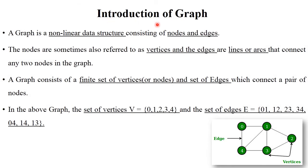The first point is introduction of graph. Graph is a non-linear data structure and graph is a collection of nodes and edges. All the nodes are connected with each other by using edges. Nodes are sometimes called as vertices, and edges are also called as lines or arcs that connect them.